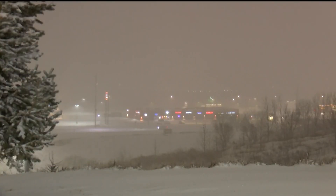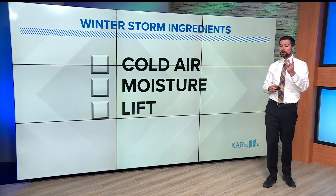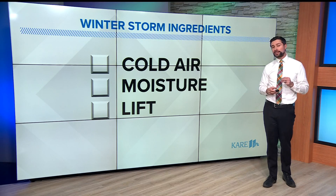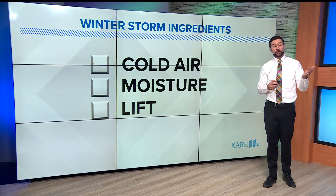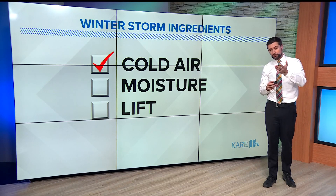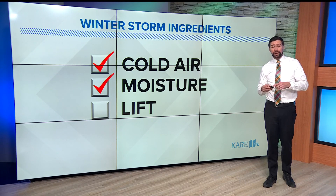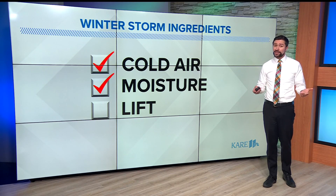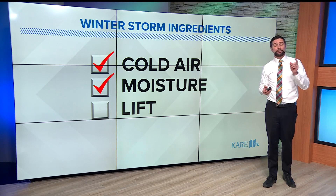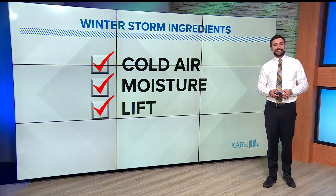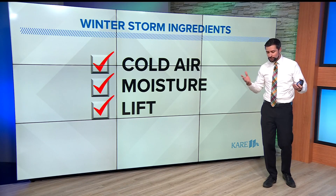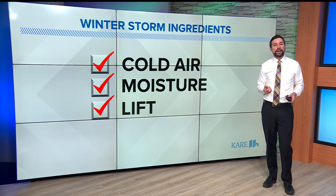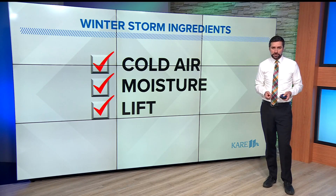Let's kick off Winter Weather Awareness Week by talking about the anatomy of a winter storm. There are three main ingredients to get a powerful winter storm: cold air for snow and ice to form, moisture — the more water in the air, the higher the snowfall totals — and lift, which causes the moisture to rise, cool, condense, and form precipitation.